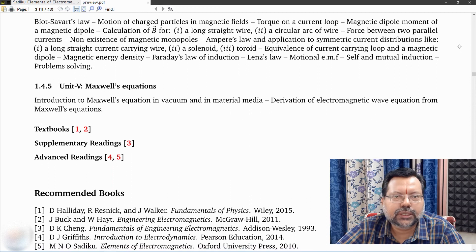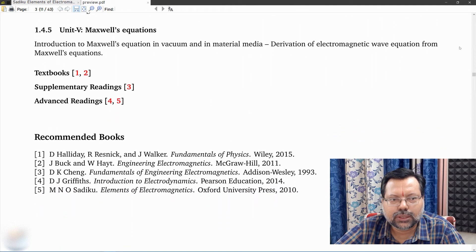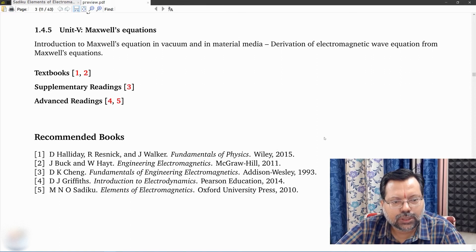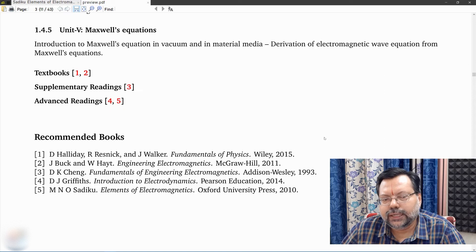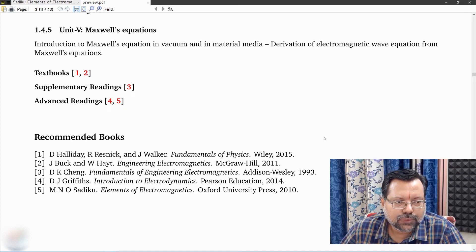And then you have some recommended textbooks and additional books. Now, textbook one and two, which means the Resnick and Halliday book, the second one is engineering electromagnetics. You need not follow an identical book; you can follow an equivalent book. That's why we have given five books.